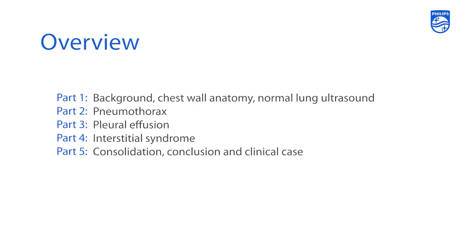As we get started, we're going to go through the layout of the talks. We're going to give you a little bit of background on lung ultrasound, talk about chest wall anatomy, and then dive into what normal lung ultrasound looks like. From there, the series will go on to talk about pneumothoraces, how to differentiate between normal lung sliding and a patient who may have a pneumothorax, pleural effusions, interstitial syndrome, and consolidation.